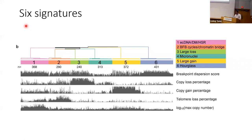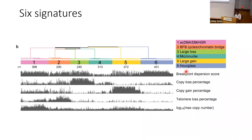Out of the six signatures, we connected three with known biological mechanisms. The remaining three new signatures we named large loss, large gain, and hourglass. Hourglass is particularly interesting.